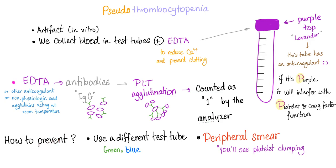How to prevent pseudo-thrombocytopenia? Use a different test tube — use the green one or the blue one. The blue one has sodium citrate; the green one has heparin. They won't have EDTA. By the way, it doesn't have to be EDTA — any other anticoagulant can cause the same problem. Non-physiologic cold agglutinin at room temperature can also cause the same pseudo-thrombocytopenia.